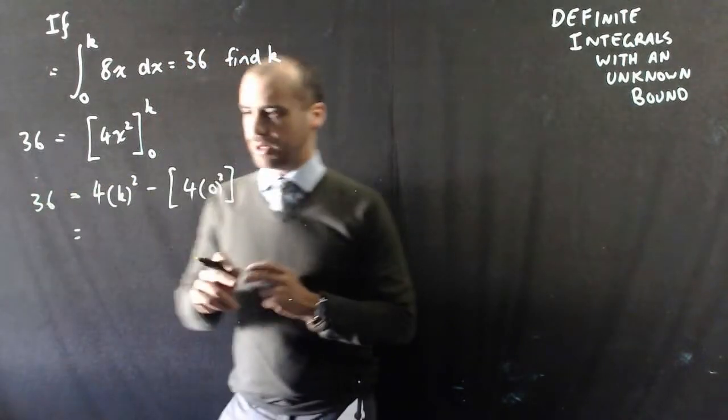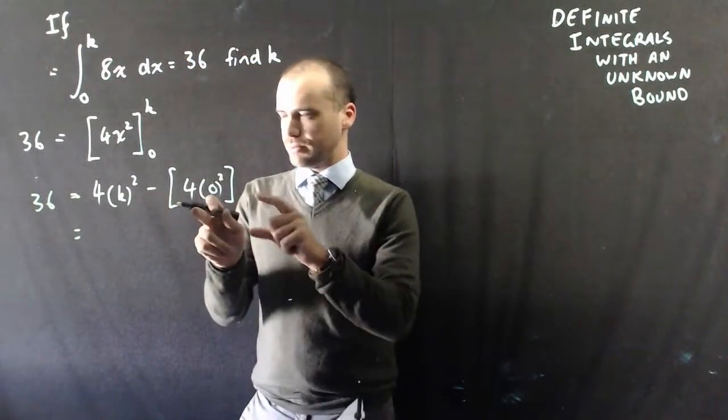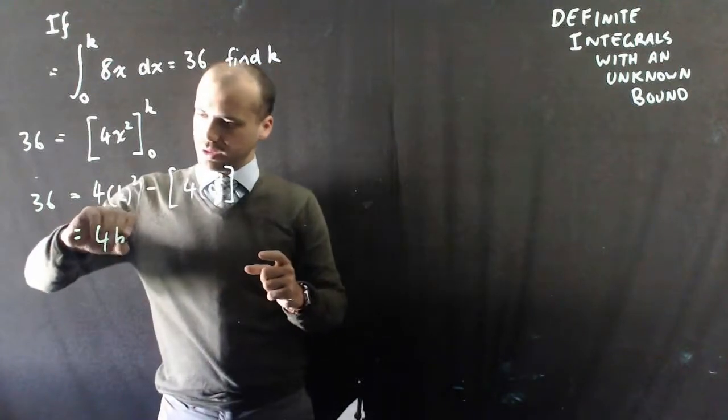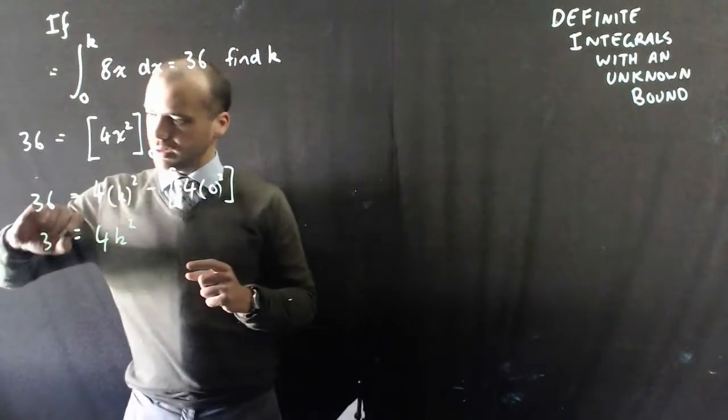All right, so subtracting that, nothing. So it's just 4k squared equals 36.